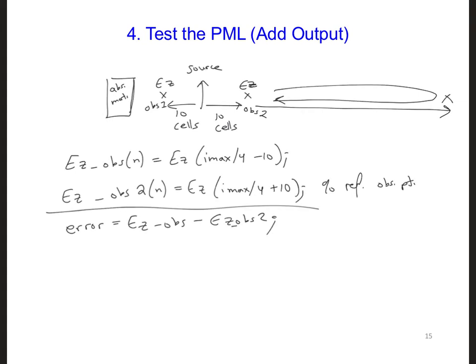But instead of just simply subtracting these two results, it's more helpful to get a relative error. The relative error tells us by what percent the two results are different from each other. So in this case we would set the error equal to the absolute value of E_z obs observation point minus E_z observation point 2, and we're going to divide each of those numbers, which is why there's a period here, by the absolute value, the max value of the reference grid, reference observations, E_z obs 2. So this would give us the relative error.